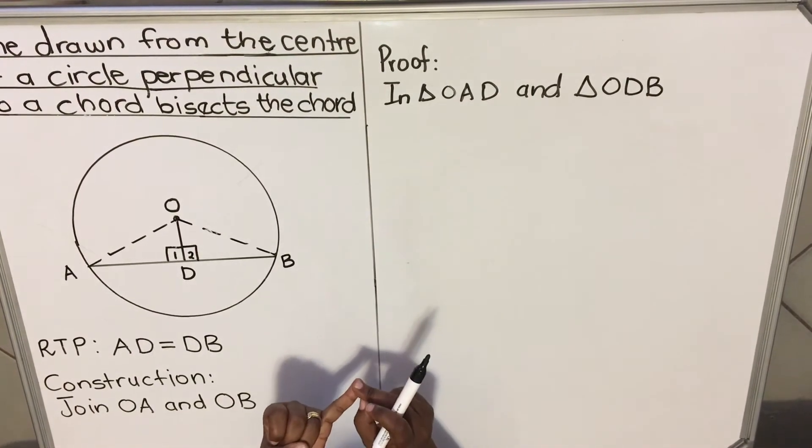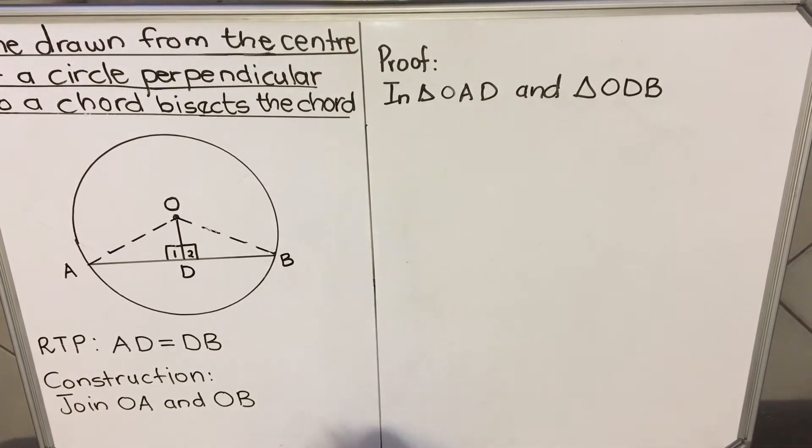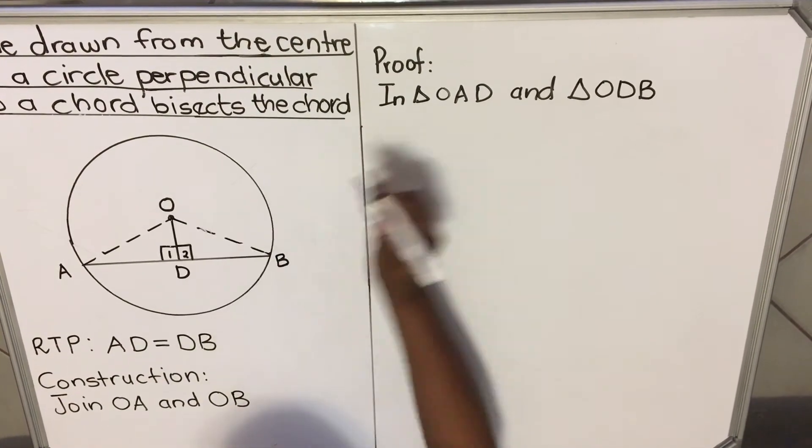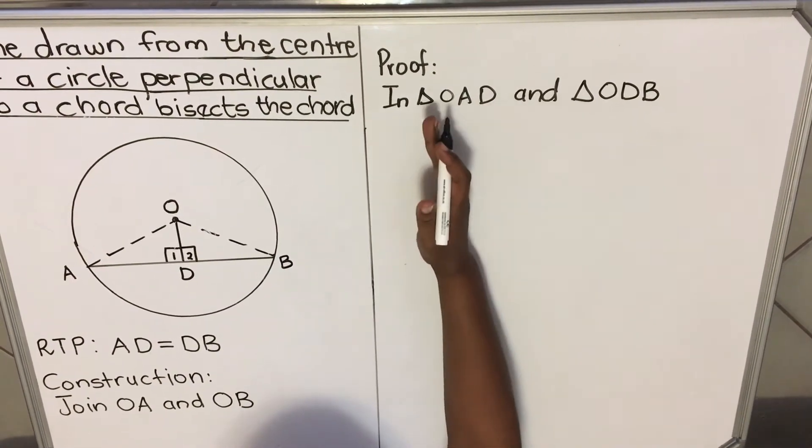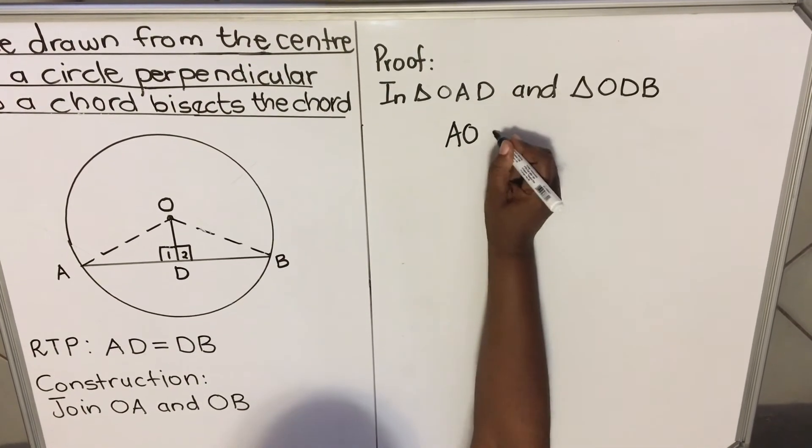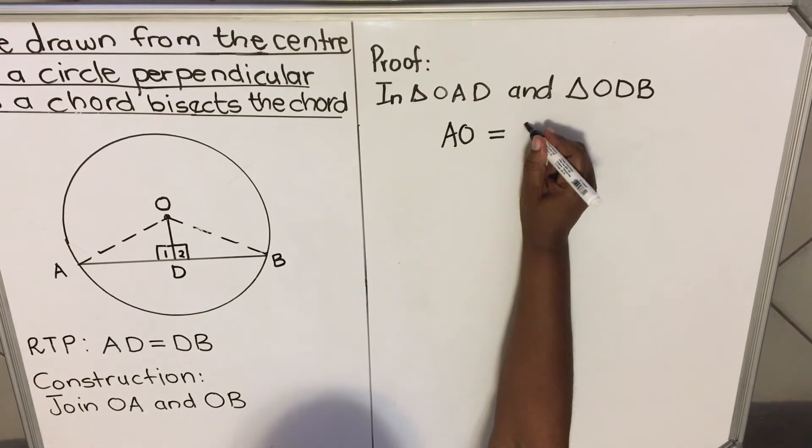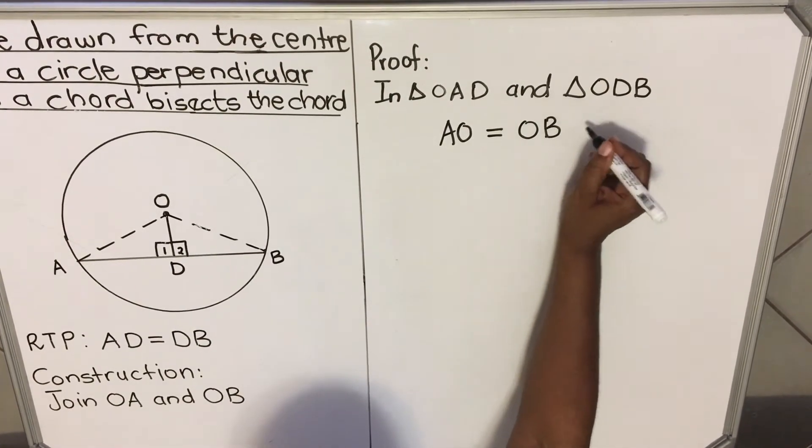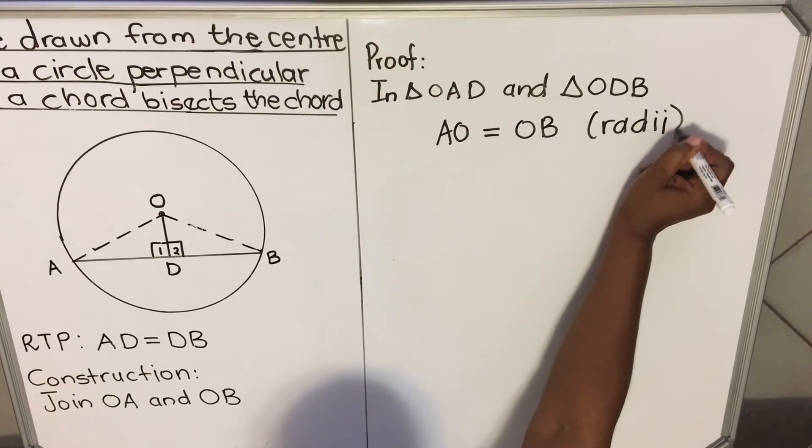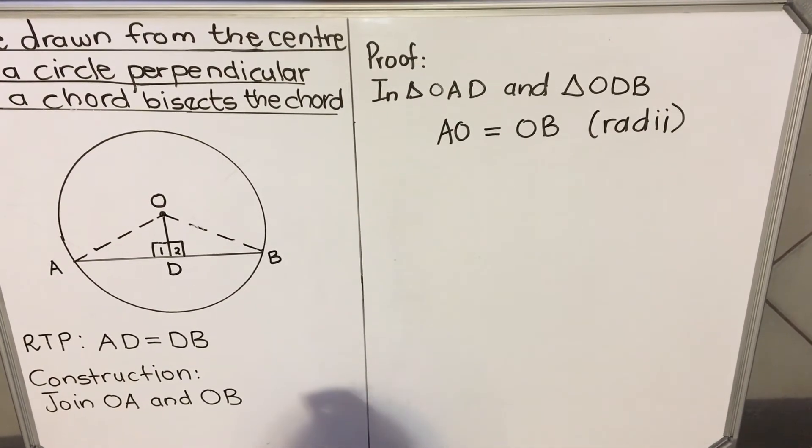And you write the things that are in the triangle, under that triangle. So line AO is equal to line OB in the other triangle. And then both of these lines are radii. So the reason is radii. In a circle, all the radii are equal. So that's why these two lines are equal.